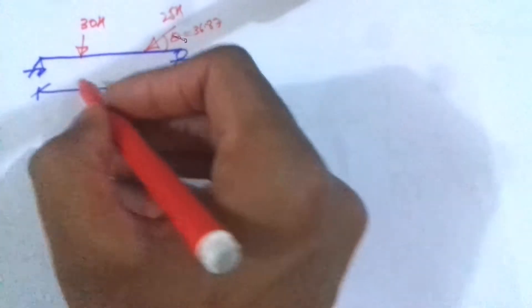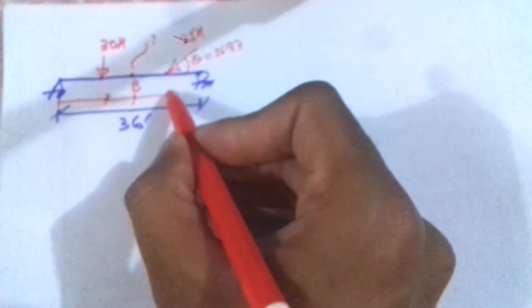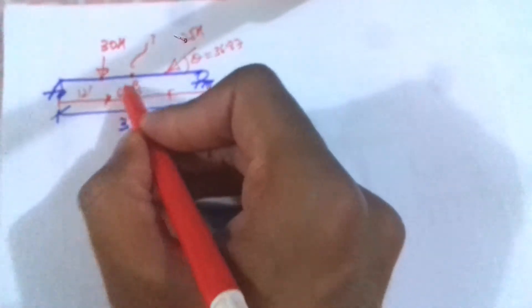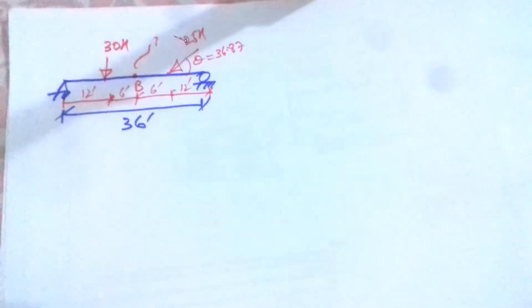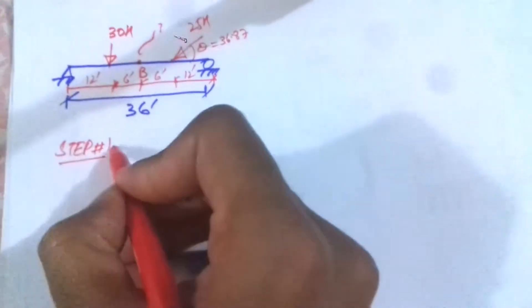Point B is where I have to calculate the shear force and the bending moment. The distances of various points are given: 12 feet, 6 feet, 6 feet, and 12 feet. So now the first step is I need to draw the free body diagram.